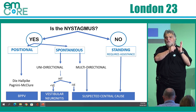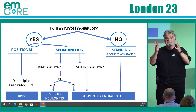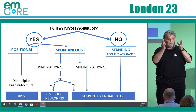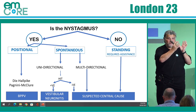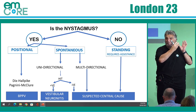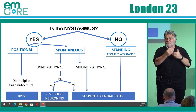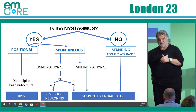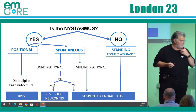When you're doing a HINTS test and you move the head — the head impulse test — you move the head towards the affected ear, that's when you'll get the abnormality. I'll show you that in a second.